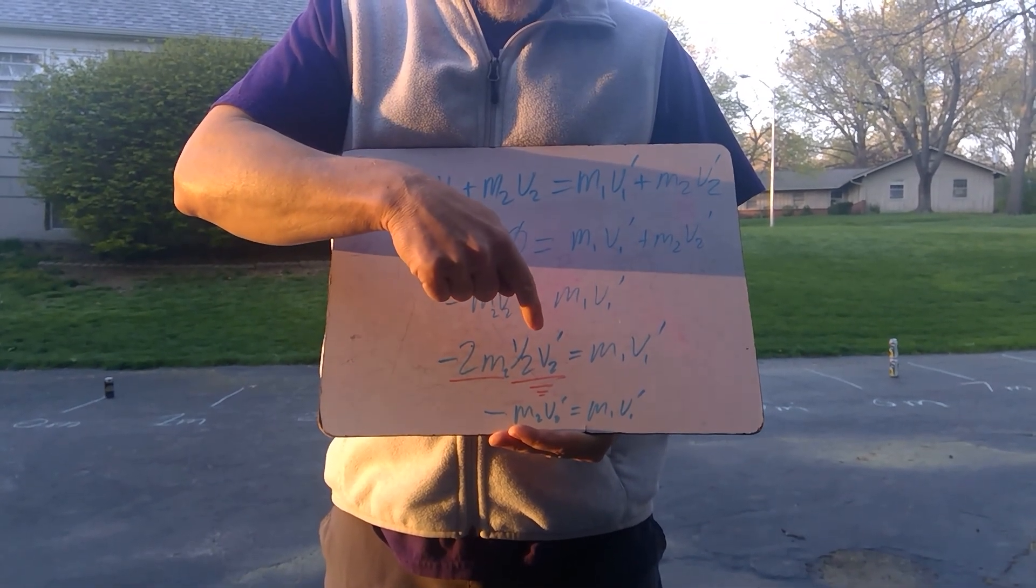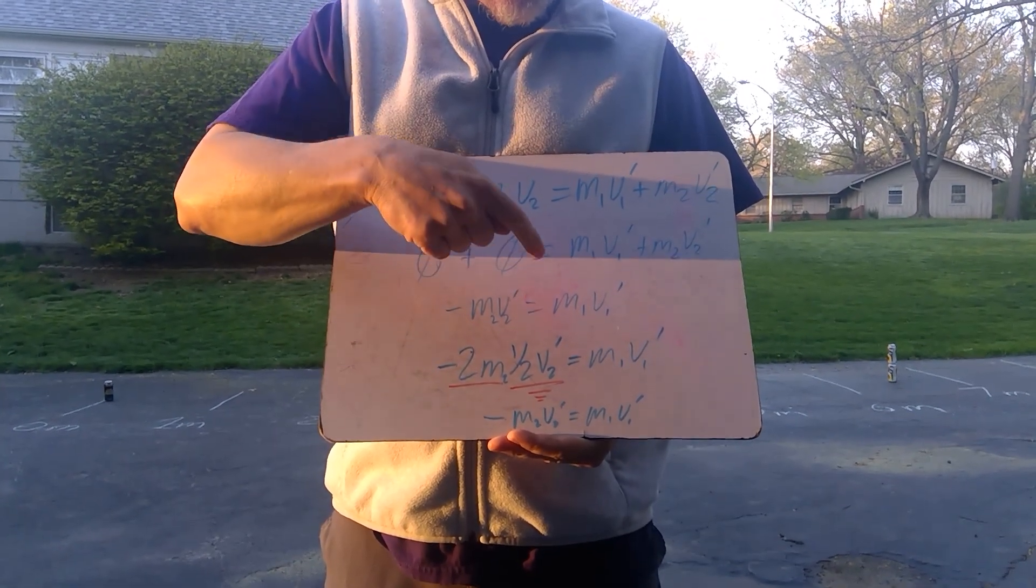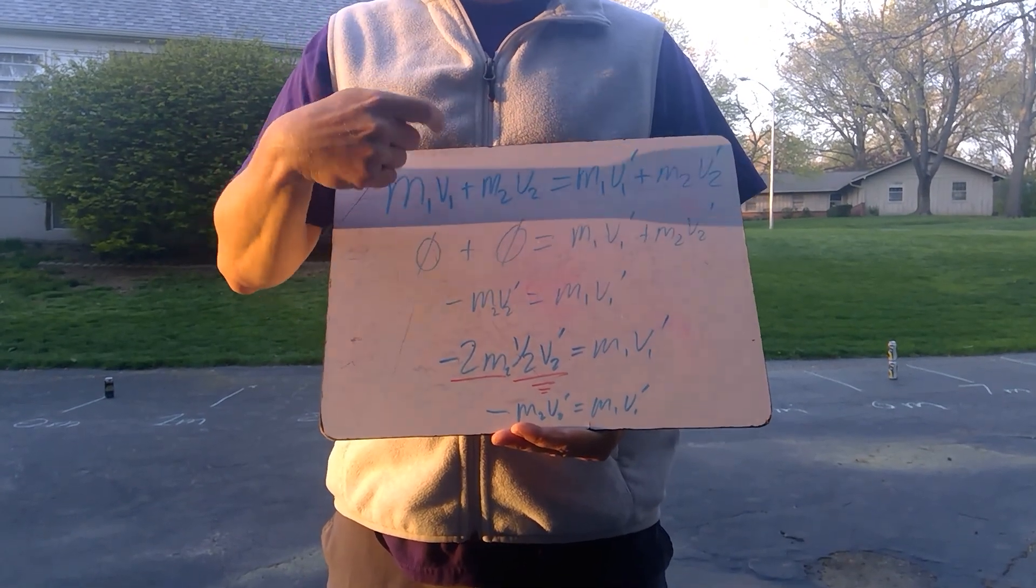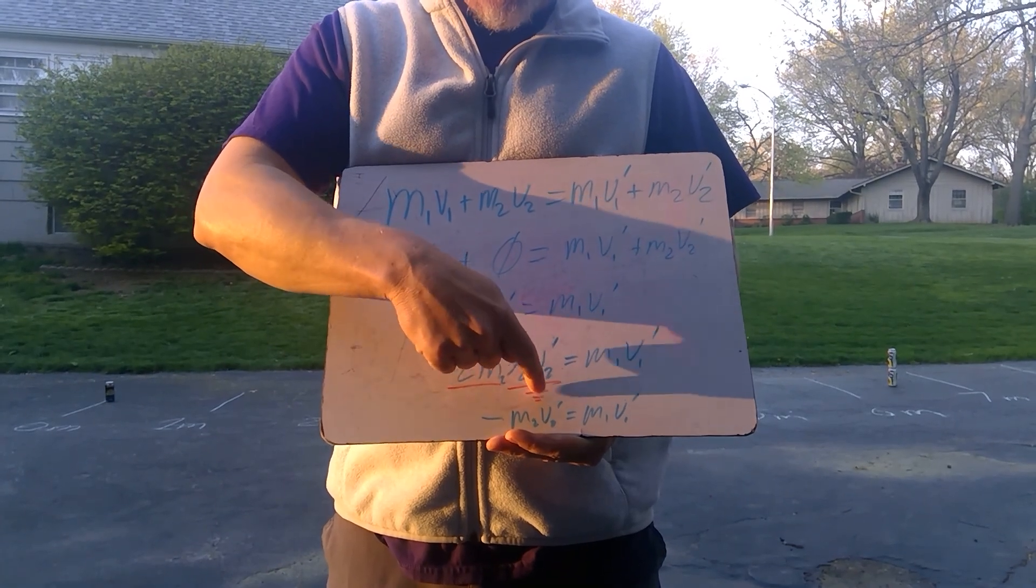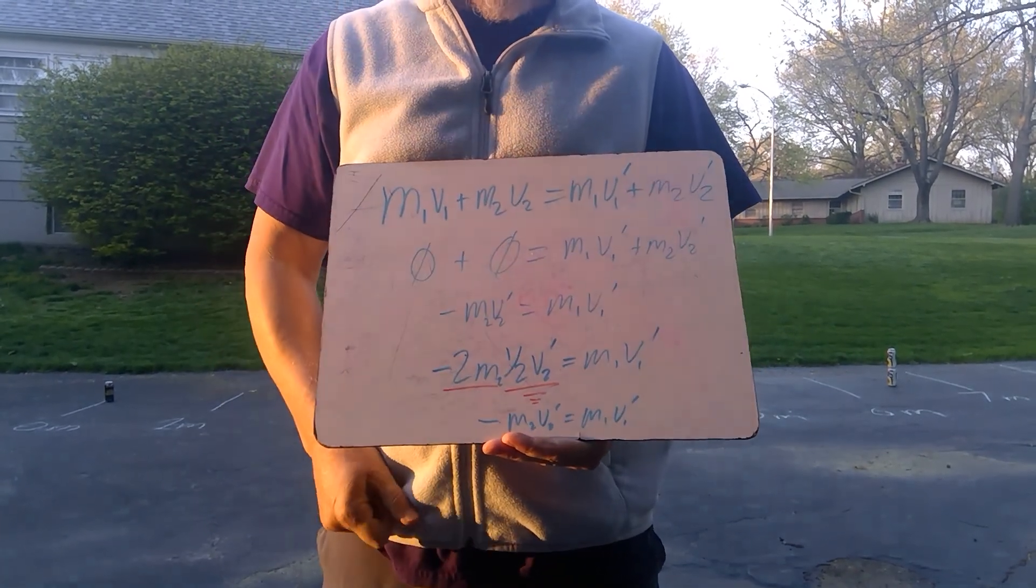So that's why the single can went twice as far as the other can, because it's going twice as fast. It's got half the mass, that means it's going twice as fast. Or if this is twice the mass, that is half the velocity. You have the same momentum, before and afterwards.